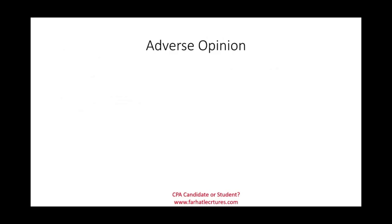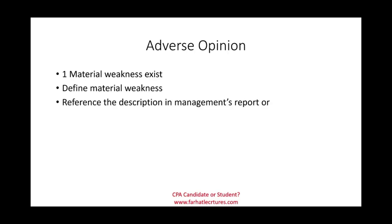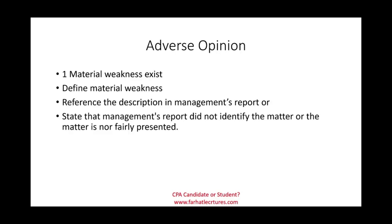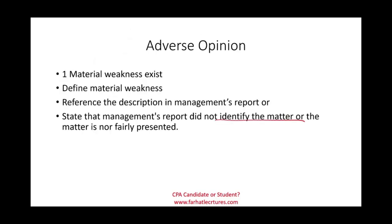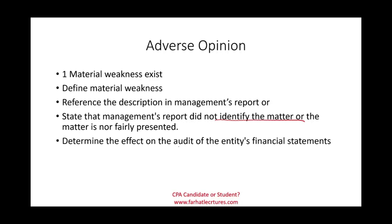Starting with adverse opinion: an adverse opinion is basically a bad opinion. When do we give a bad opinion? When we have one material weakness — one material weakness is good enough. In that report we are going to define the material weakness, reference the description in the management report, or state that the management report did not identify the matter or did not present the matter properly. That is why management report being incomplete is related to adverse opinion. We also have to determine the effect on the audit of the entity's financial statements.